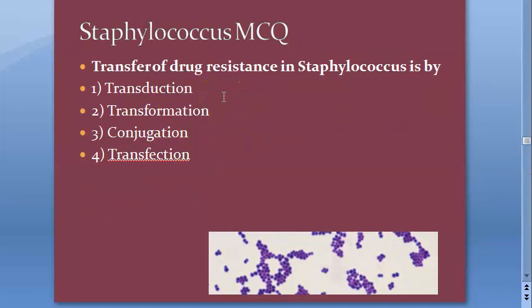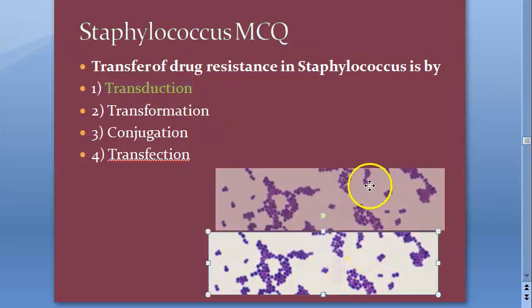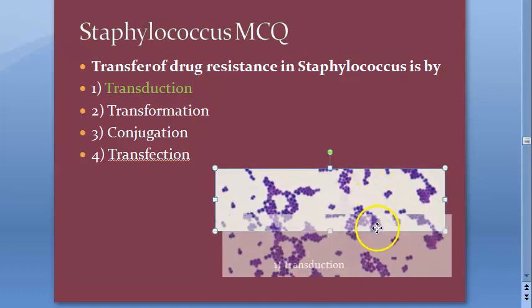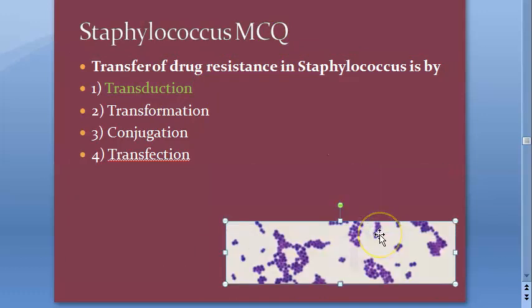Transfer of drug resistance in staphylococcus is by transduction. Transduction requires a virus. The virus brings the chromosome, and the penicillin binding protein is altered because of this.